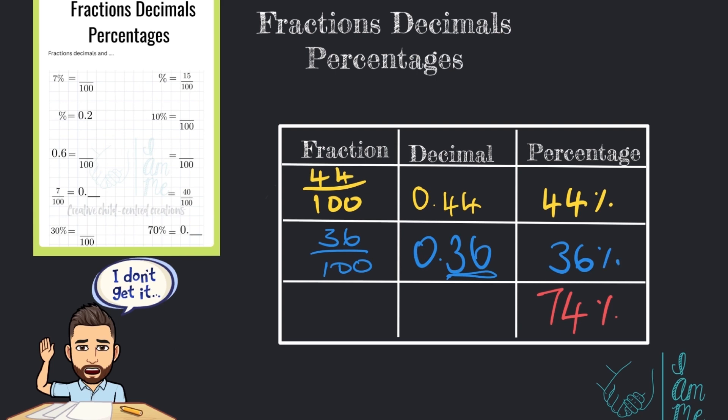Finally, we have 74%. Well, 74% is the same as 74 out of 100. And we use those two spaces here. Simple.